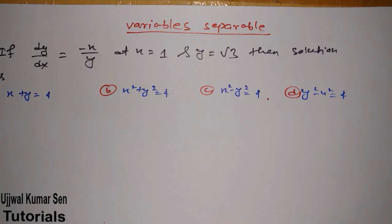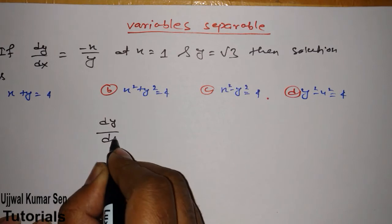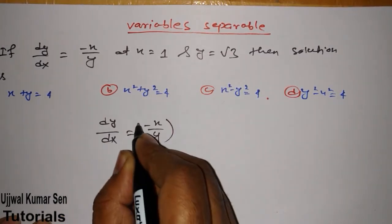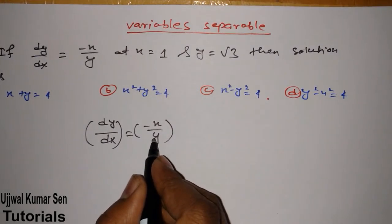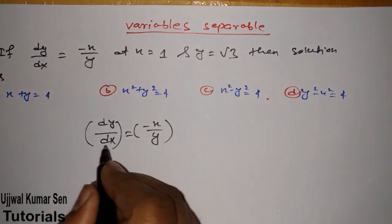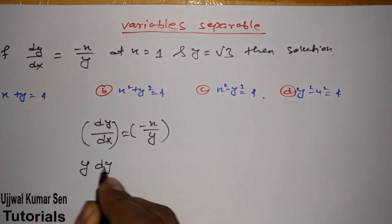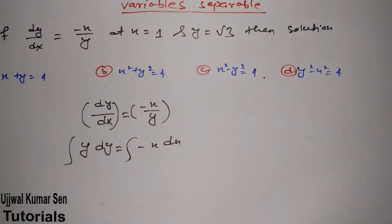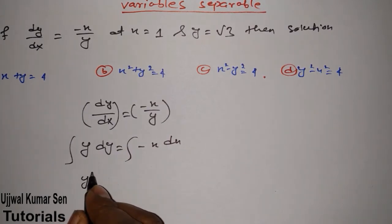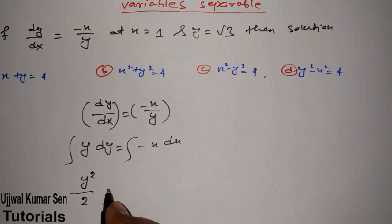In this first question, we are given the differential equation dy/dx = -x/y. To solve this, just do cross multiplication — separate the y terms on one side and x terms on the other side — so we get y dy = -x dx.